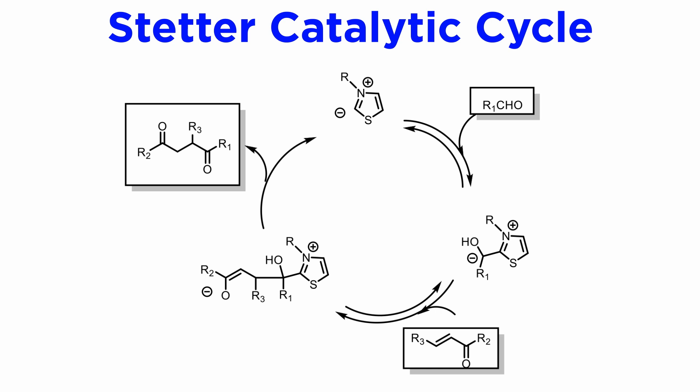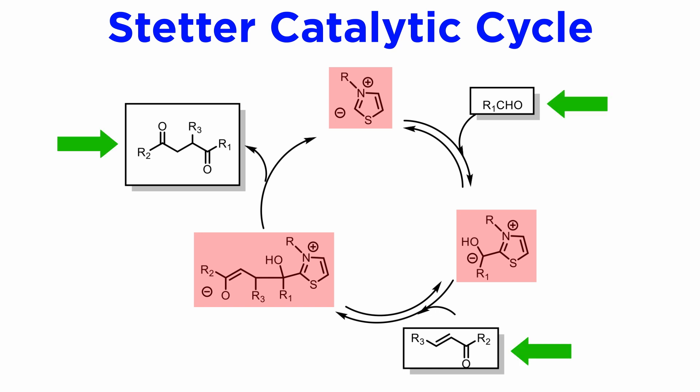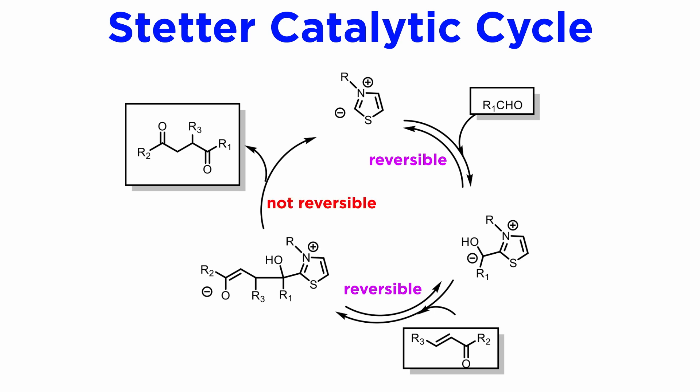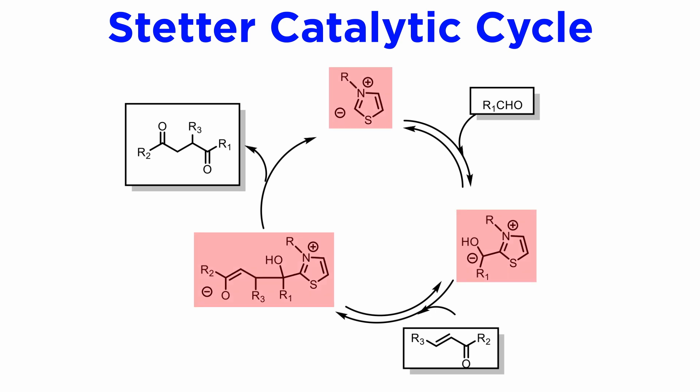In addition to learning how nature can inspire synthetic operations we never thought possible, we have also encountered our first catalytic reaction in this series on name reactions. This allows us to introduce a special kind of symbolism to represent mechanisms: the catalytic cycle. Here we represent all the catalytic intermediates within a cycle, and the stoichiometric inputs on the outside. As the cycle proceeds, aldehyde and enone are consumed, forming the 1,4-diketone. The first two steps are reversible, but the third one is not, and this makes the cycle go downhill in free energy. The intermediates in the cycle are present in very low concentrations, their sum being equal to the amount of catalyst we have introduced — usually 5 to 10 mole percent.